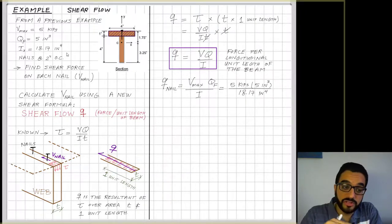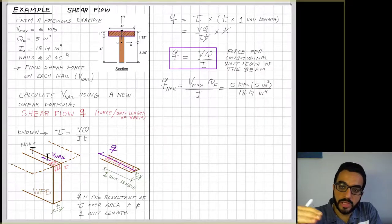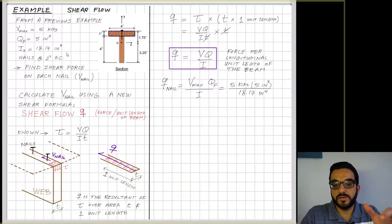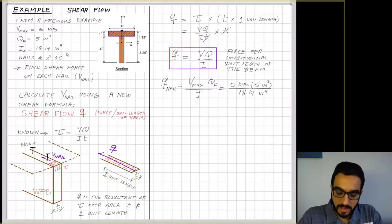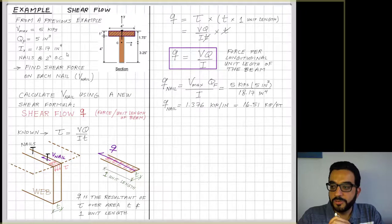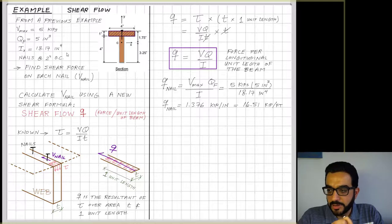If we analyze the shear flow going through the nails, we plug in the values we have: V_max is five kips, the q of the area that's supported by the nails, which is the flange area, we calculated from the previous lesson, and I is given to us. We'll find that q_nail equals 1.376 kip per inch, because my units here are in inches, so my unit length of the beam is an inch. But I'm interested to bring it to feet here, so that would be 16.52, multiplying by 12.